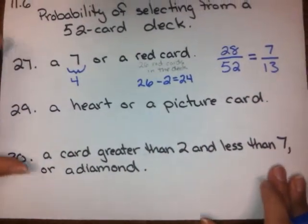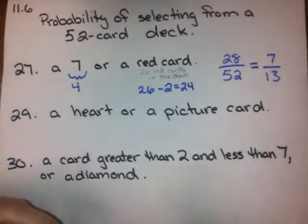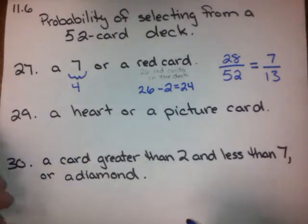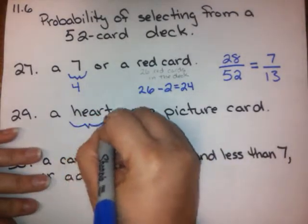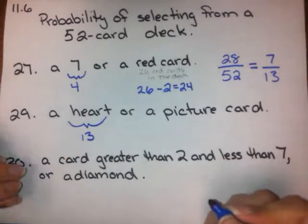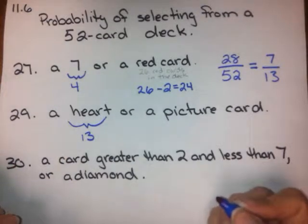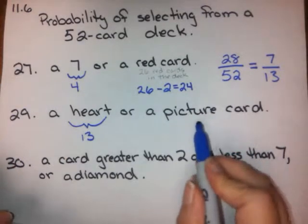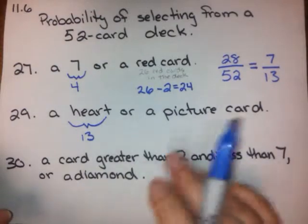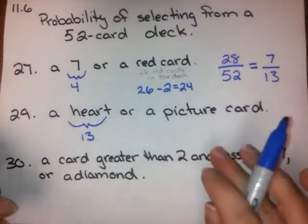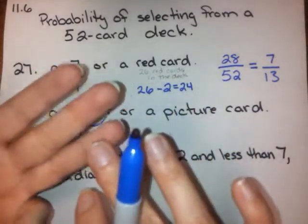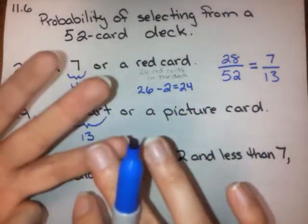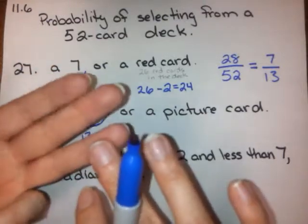Let's try number 29: what's the probability of selecting a heart or a picture card? How many hearts are in the deck? For any suit the answer is always 13 — there are 13 hearts in that deck of cards. How many picture cards are there? We have to be careful because some people get confused. The picture cards are jack, queen, and king — those are the only picture cards. So there are three picture cards across four suits.